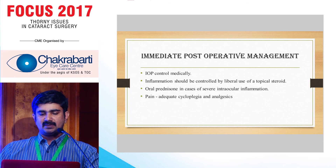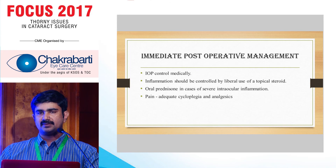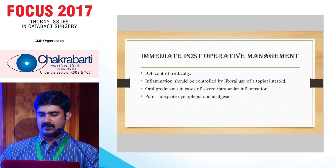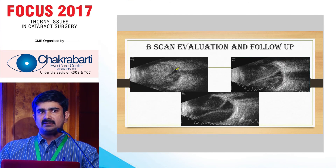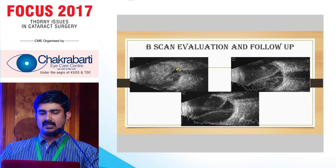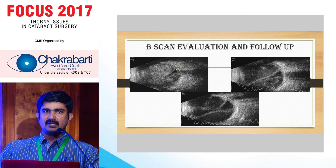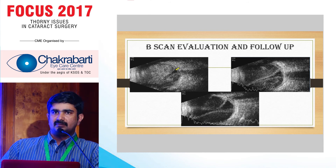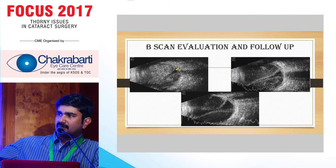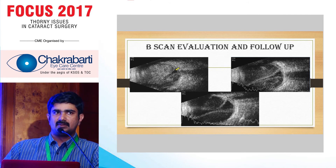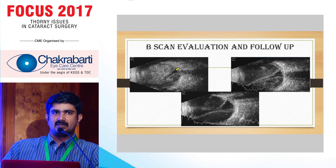Immediate post-operative management includes IOP control medically, liberal use of topical and systemic steroids, and use of cycloplegics and analgesics to control pain and improve patient comfort. B-scan is the most useful tool for evaluation, diagnosis, and follow-up of patients with suprachoroidal hemorrhage. Be careful in interpreting B-scan: a massive suprachoroidal hemorrhage might be mistaken for vitreous hemorrhage because the choroidals are not seen. The giveaway sign is a small triangular coalescent area just in front of the disc — this tells you it is a suprachoroidal, not simple vitreous, hemorrhage. Attempting vitrectomy in such an eye can be very disastrous.